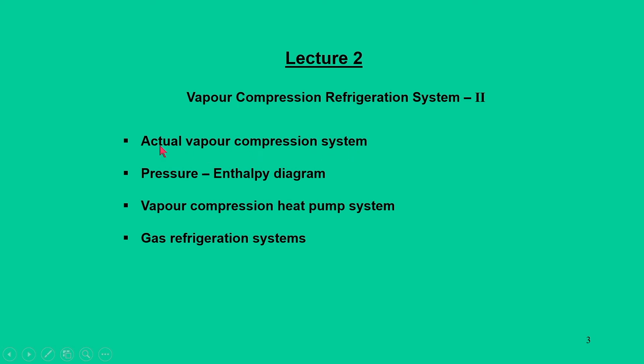In our previous class, we analyzed an ideal vapor compression system consisting of condenser, evaporator, compressor and a throttling valve — that was the ideal case of operation. Now we will look into the actual vapor compression systems in which we will introduce irreversibilities into the components of the vapor compression system.